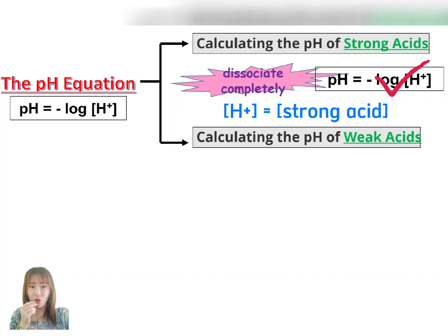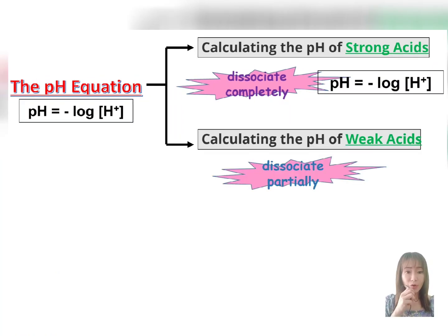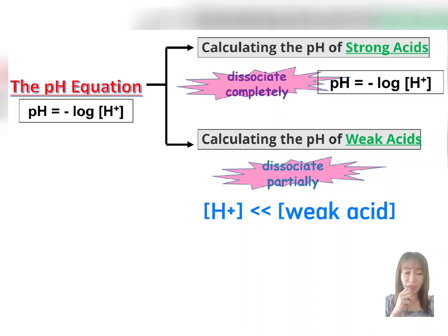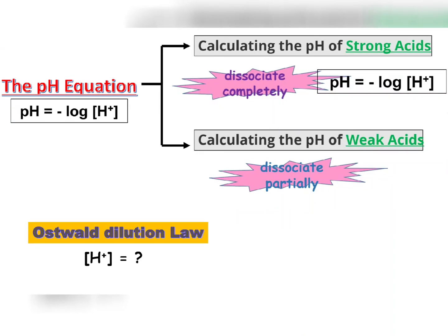So we can use the pH equations directly to determine the pH value of strong acid. However, weak acid dissociates only partially in water. Therefore, the concentration of hydrogen ions is less than the weak acid concentration. In order to determine the pH value of the weak acid, we need to determine the concentration of hydrogen ions first, by using Ostwald's dilution law.